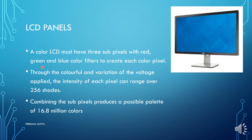Now, LCD panels. A color LCD must have 3 sub-pixels with red, green, and blue color filters to create each color pixel. Through variation of voltage applied, the intensity of each pixel can range over 256 shades. Combining the sub-pixels produces a possible palette of 16.8 million colors.